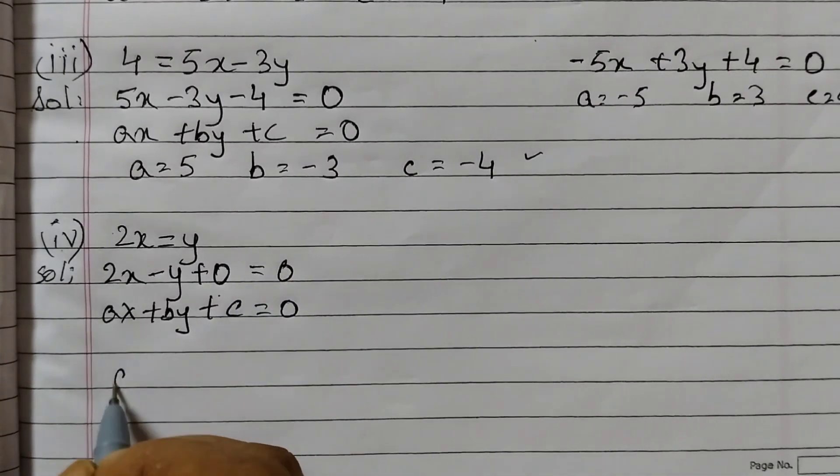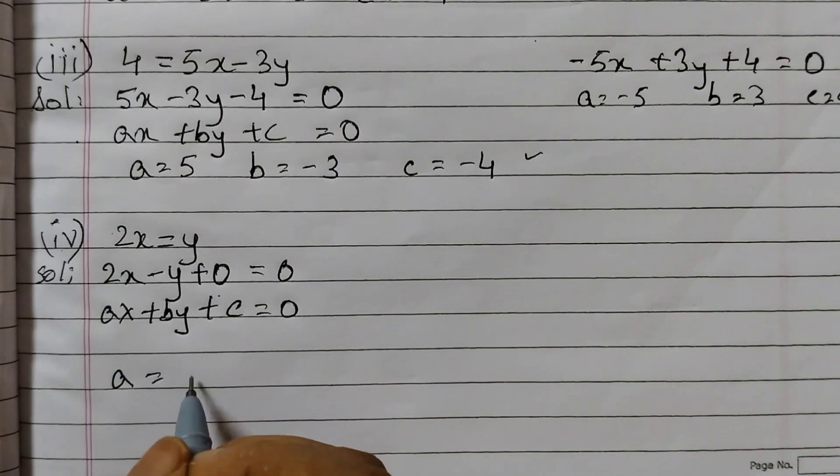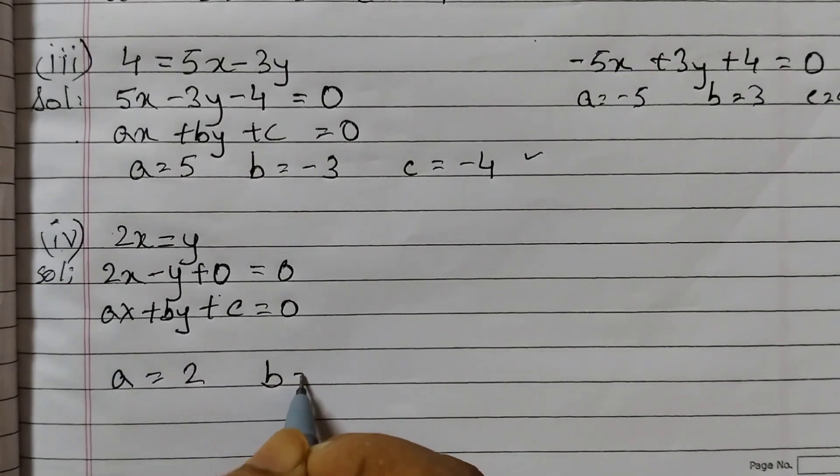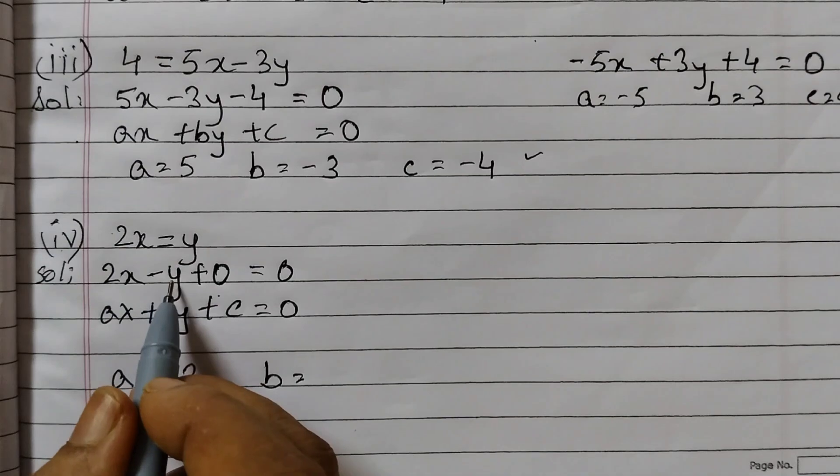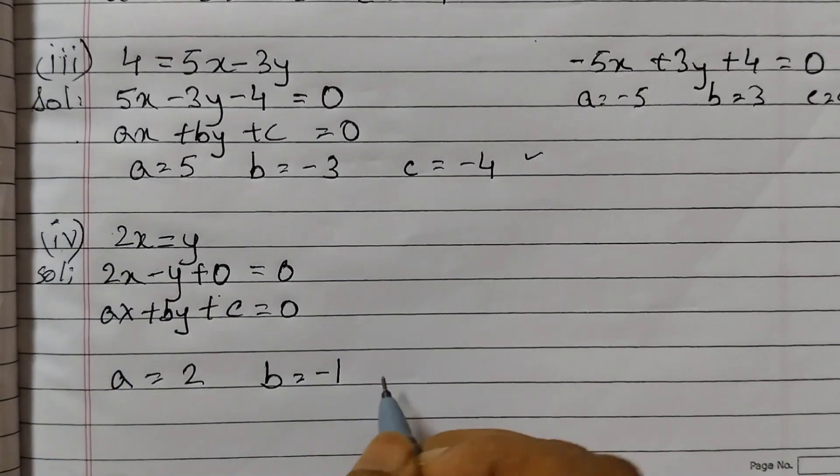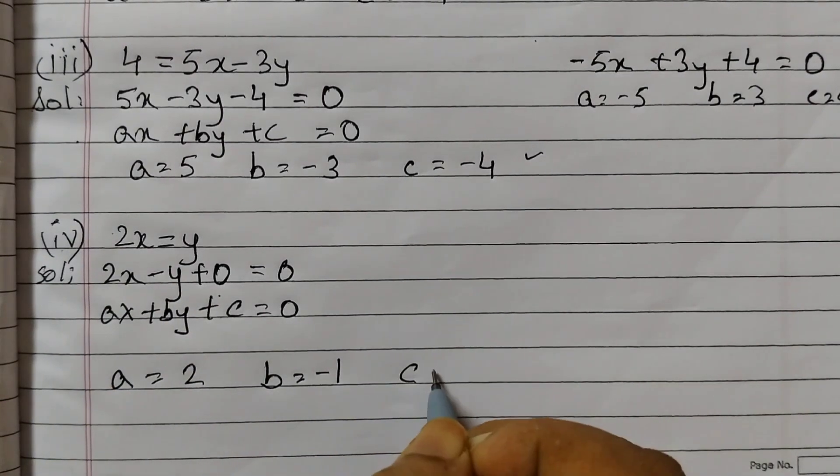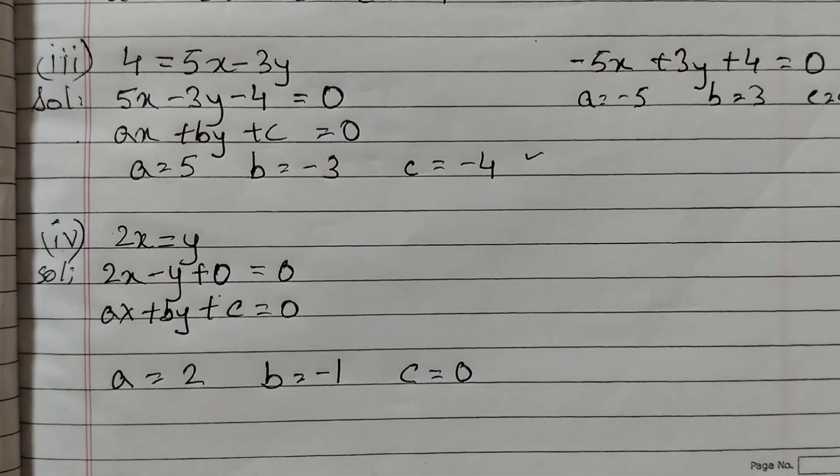Now just compare. a is equal to 2. b is equal to minus and nothing is there, just y. That means 1 and c is equal to 0.